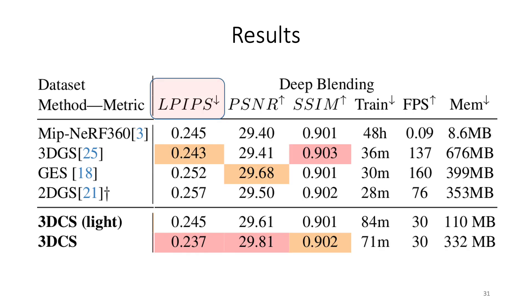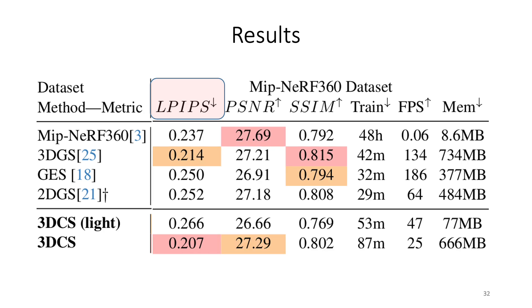For the LPIPS metric, which is considered the most important for graphics, we can always achieve better results on Deep Blending, the Tanks and Temples, and even on the MipNeRF 360 dataset than the NeRF baselines and the 3D Gaussian Splatting baselines.